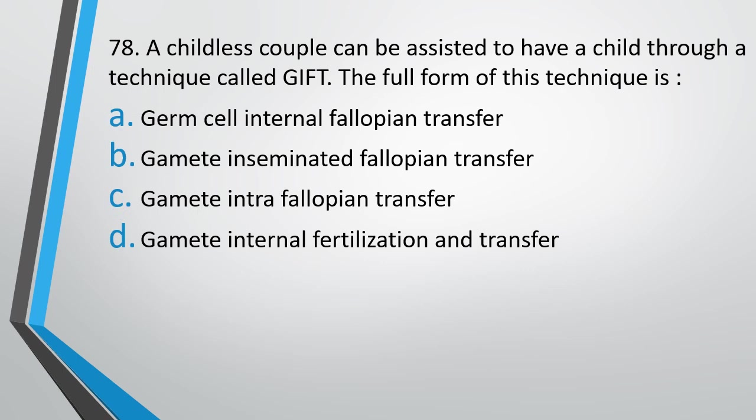A childless couple can be assisted to have a child through a technique called GIFT. The full form of this technique is: germ cell intra-fallopian transfer, gamete inseminated fallopian transfer, gamete intra-fallopian transfer, or gamete internal fertilization and transfer. The correct answer is option C — gamete intra-fallopian transfer.